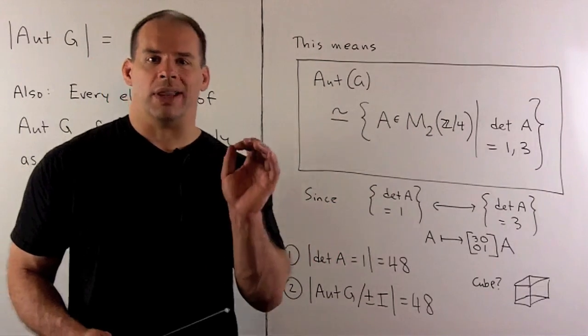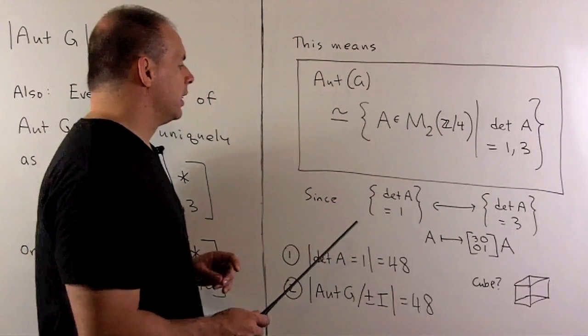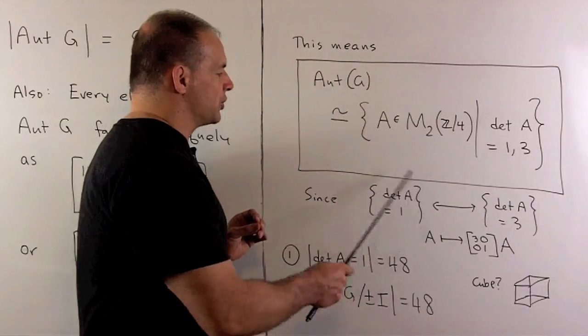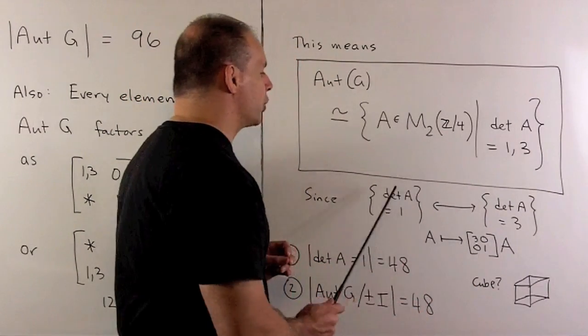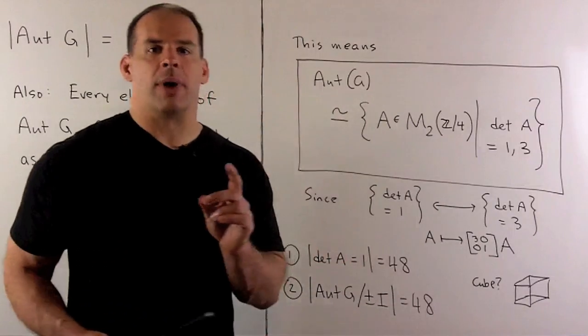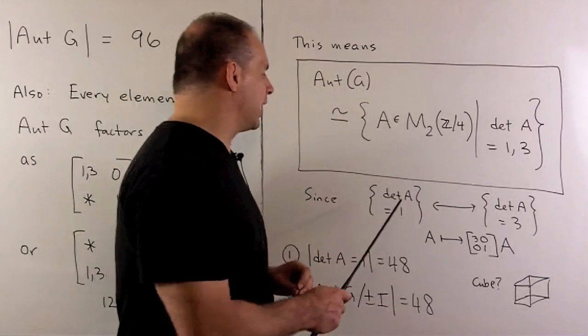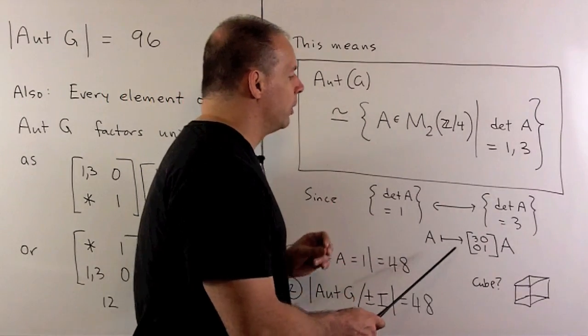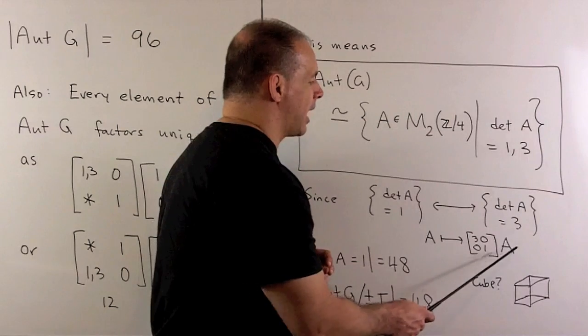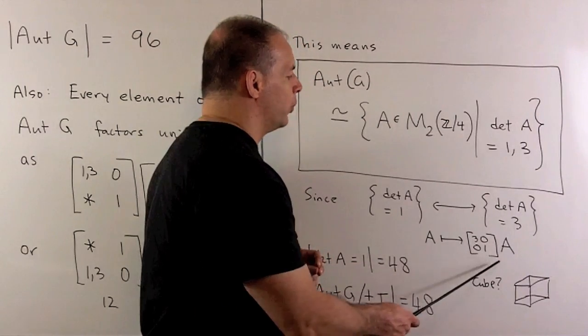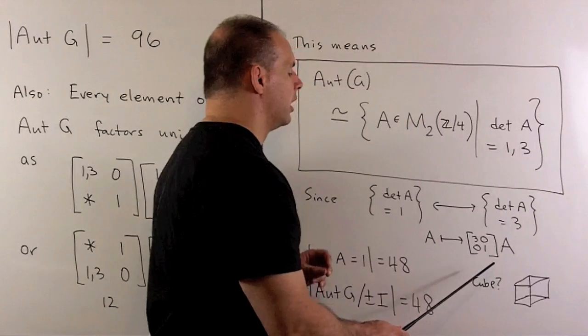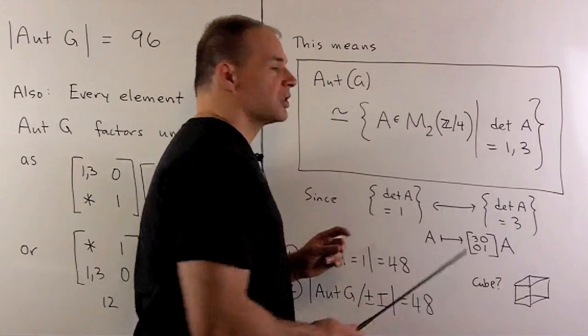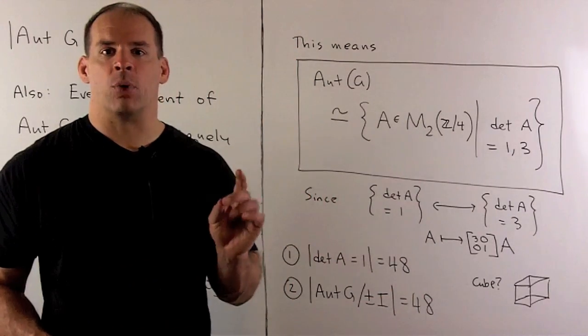Now, one last item. If I take the matrices of determinant 1, determinant equal to 3, these are going to have the same order. So, I can set up a bijection just by sending any matrix here to 3,0,0,1 times A. And then, we can undo this by just applying it twice. So, these sets split the group, so they each have order 48.